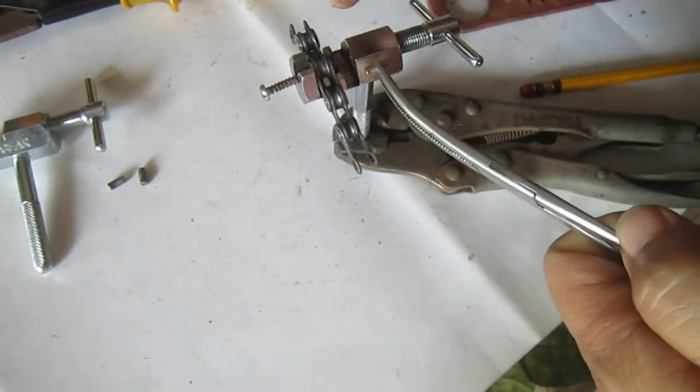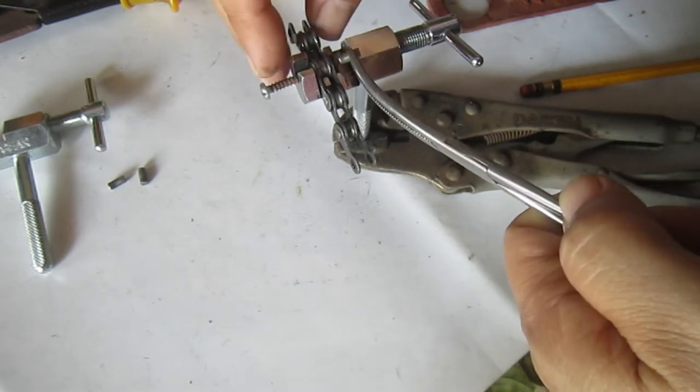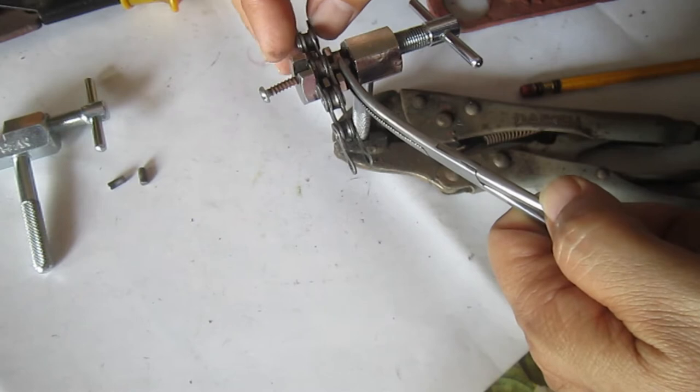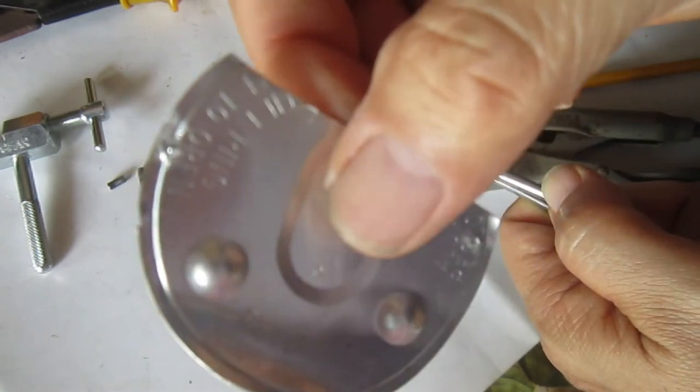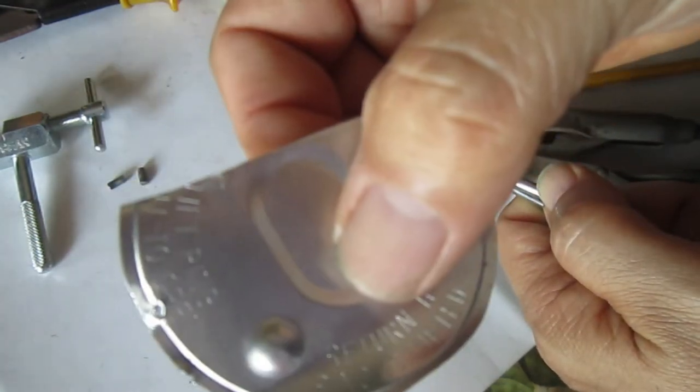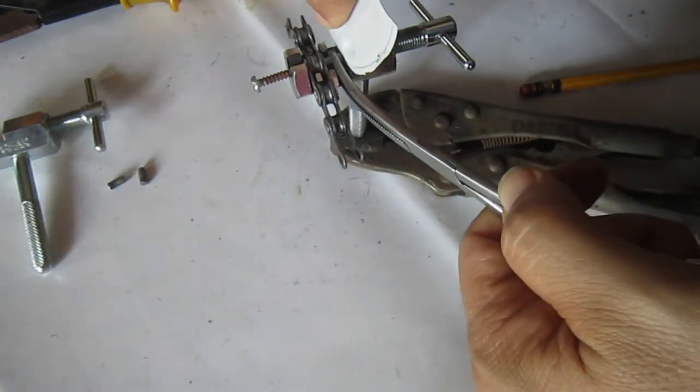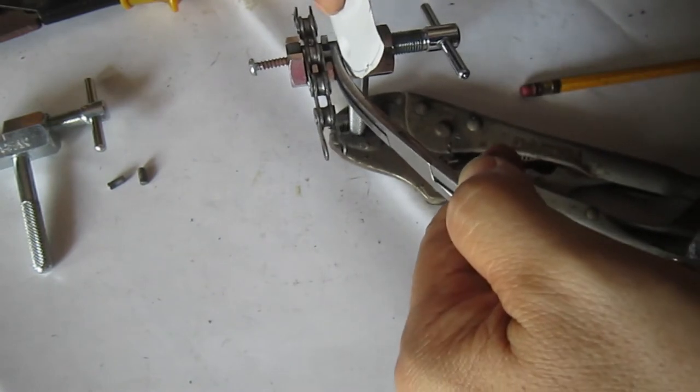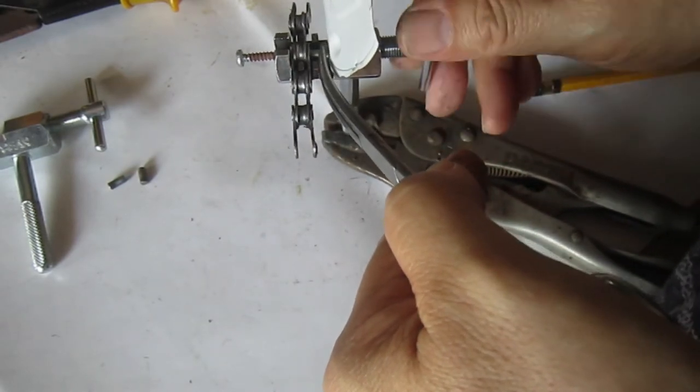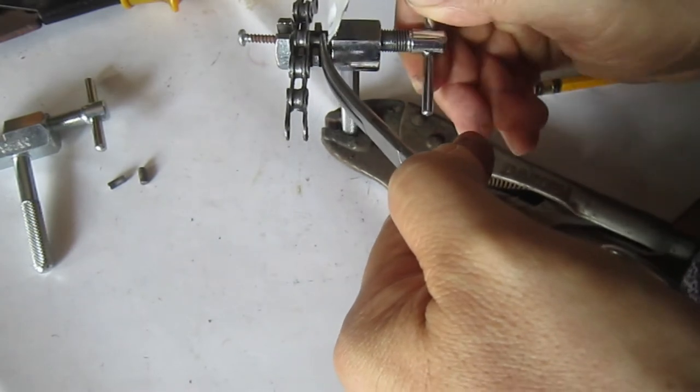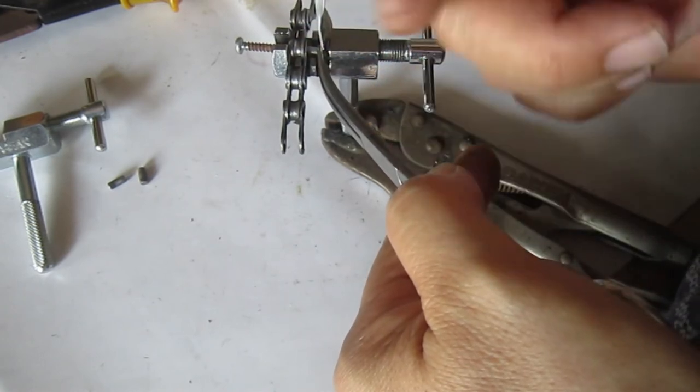And then just align your pin at the hole of the outer plate here. Okay, to make it snug I usually cut a piece of aluminum from a soda can and just place it here so that it will be snug. Okay, once in position you just turn, turn your chain tool until the pin is pushed back to the outer plate.